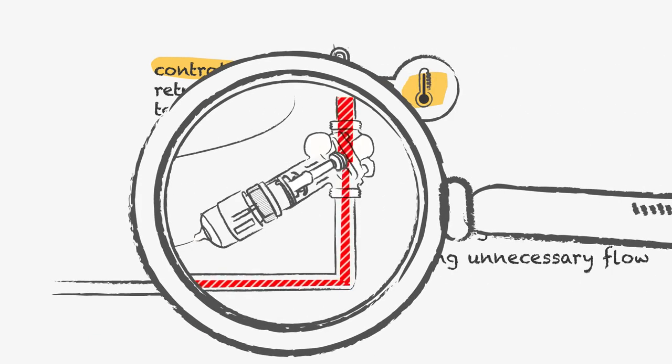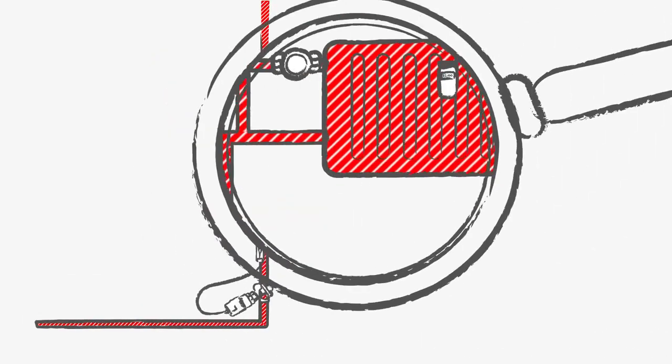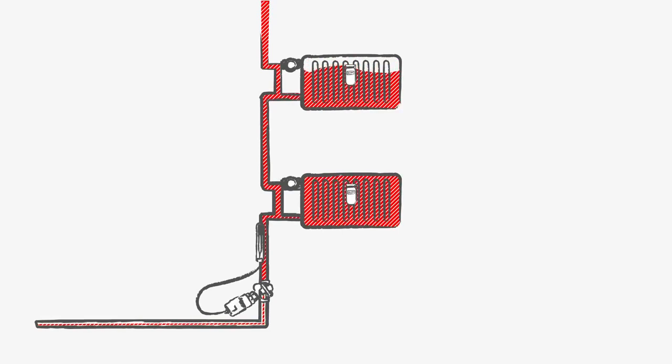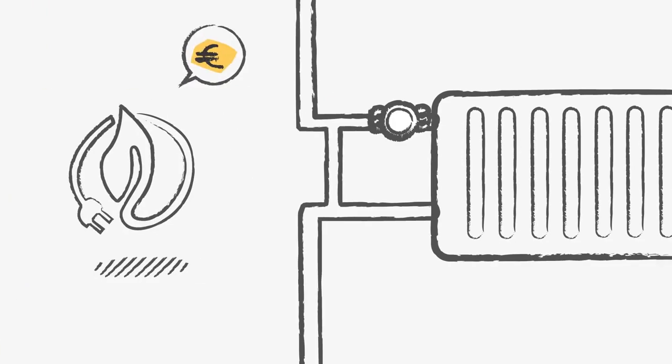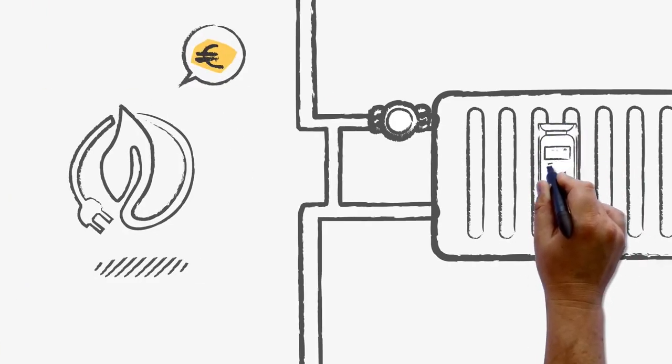Your system will now operate as a system with variable flows, so with only the right amount of flow at the right temperature, reducing pumping costs and increasing the efficiency of the heat source. And so it brings energy savings and improves the accuracy of the heat allocators.